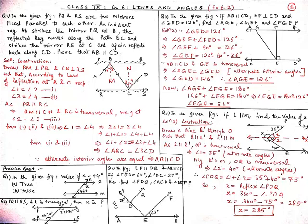Our first question for today is: in the given figure, PQ and RS are two mirrors placed parallel to each other. An incident ray AB strikes the mirror PQ at B. The reflected ray moves along the path BC and strikes the mirror RS at C, and again reflects back along CD. Prove that AB is parallel to CD.